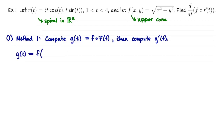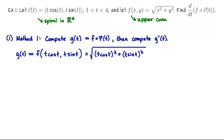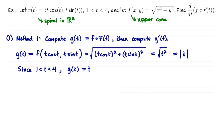So what is G of T? We evaluate F along the curve: the first input is T cosine T, and the second input is T sine T. Plugging into F, we get sqrt((T cosine T)^2 + (T sine T)^2) = sqrt(T^2 cos^2 T + T^2 sin^2 T) = sqrt(T^2). Since T is between 1 and 4, sqrt(T^2) = T. That's very easy to differentiate: G prime of T equals 1. So d/dT of F of R of T is just 1.